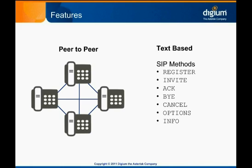SIP provides several high-level request messages called methods. These define various action types such as register, invite, and others. These methods are the basic building blocks of SIP and, combined with a series of valid response messages and the help of a few other protocols, give SIP robust call setup and call control capabilities.